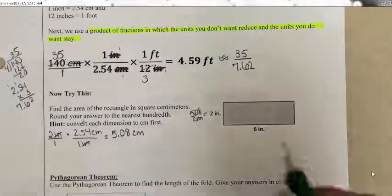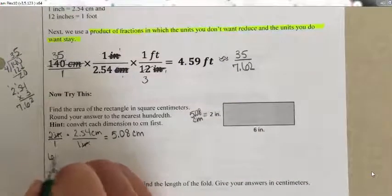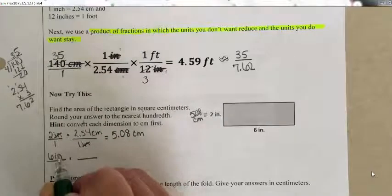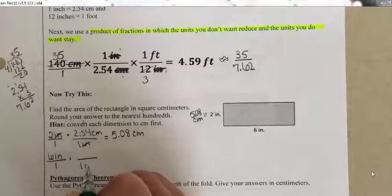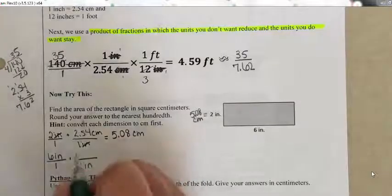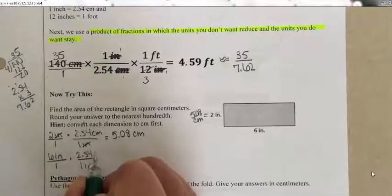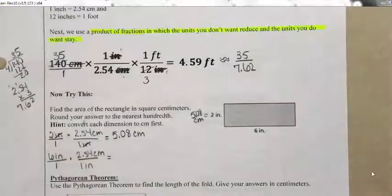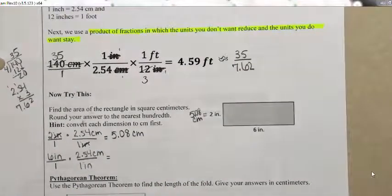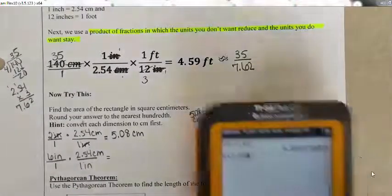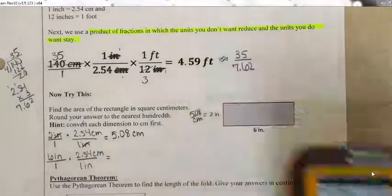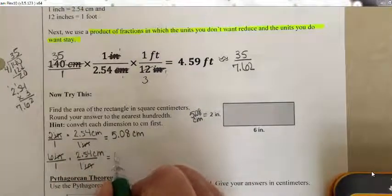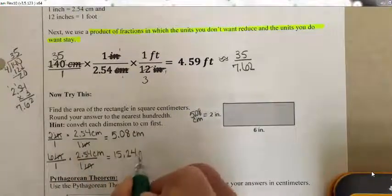I'll do the same thing with the 6 inches — write it as a fraction over 1. To convert to centimeters I need to get rid of inches, so I put inches in the denominator: 1 inch equals 2.54 centimeters. Multiplying straight across gives me 15.24 centimeters. See how the inches go away and I'm just left with centimeters?